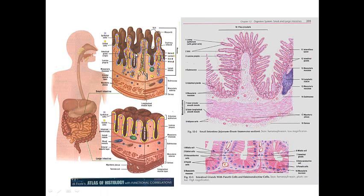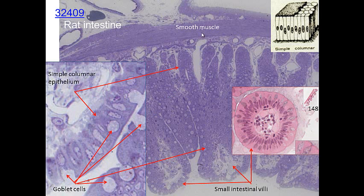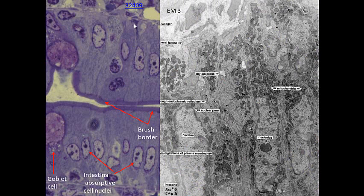Epithelium also lines the gut. Here you can see cells lining the small intestine — these are intestinal villi, projections all lined by simple columnar epithelium. Even in the large intestine you have the same type of lining, even without villi on the surface. There are intestinal absorptive cells as well as goblet cells. This is a cross-section of an intestinal villus, and you can see the goblet cells more clearly on these projections. These are simple columnar cells — one layer of columnar cells.